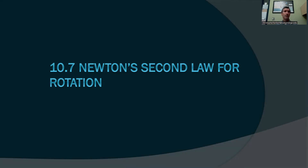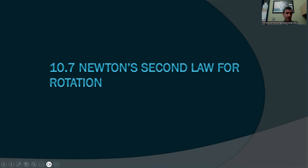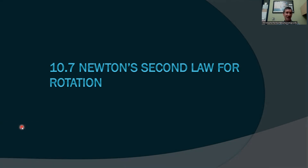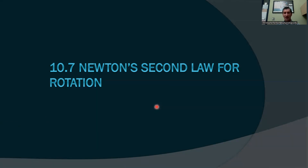We're going to do connected body problems like we did earlier, but we're going to now look at how a pulley can actually introduce some rotational inertia into the system, causing the object to accelerate at a lower rate. So let's take a look at one of the biggest examples of how torque can affect the rotation of a body.